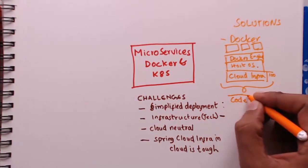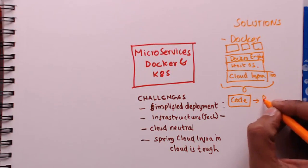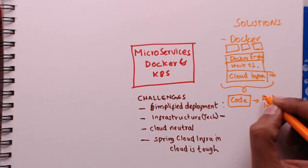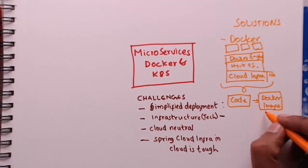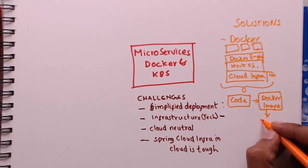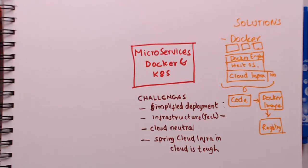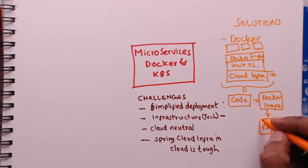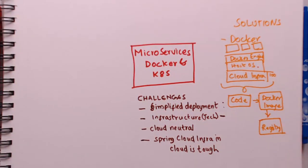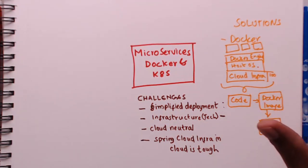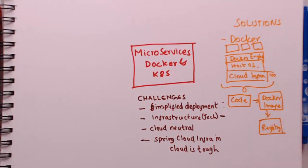How do you create Docker images? You have your application code — this might be your Spring Boot application or your Python application. From this you create a Docker image using something called a Dockerfile, where you specify the instructions to build the image. From the Docker image, you take it and put it into something called a Docker registry. The default Docker registry is hub.docker.com, and each of the cloud providers also provide their own container image registries. Once the Docker image is available in the registry, it's ready for deployment. That's the role of Docker — it enables us to create a platform-neutral, application framework-neutral, and application language-neutral deployable unit.